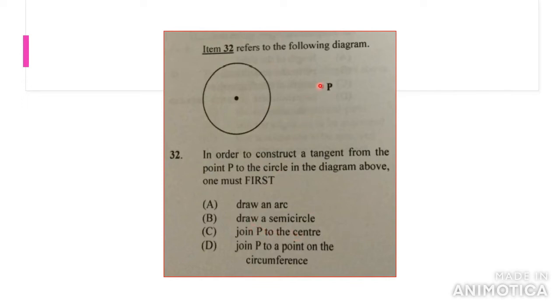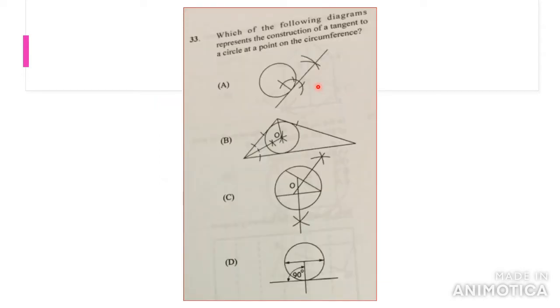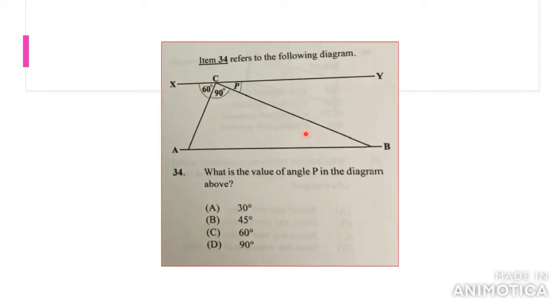Which of the following diagrams represents the construction of a tangent to the circle at the point on the circumference? The answer would be A because there's a tangent right here. You have the center line to the circumference, and then they found 90 degrees to draw the tangent to the line. The answer is A.